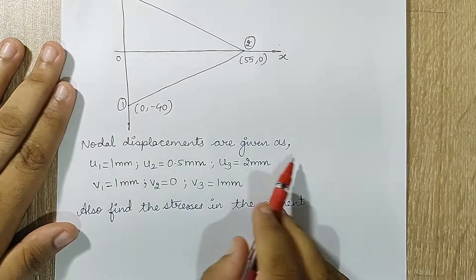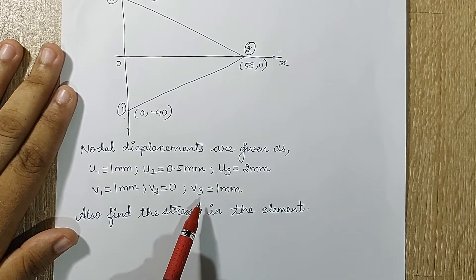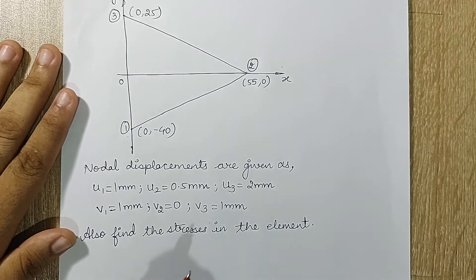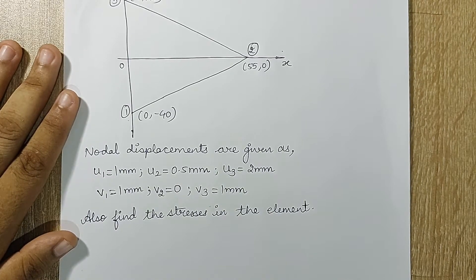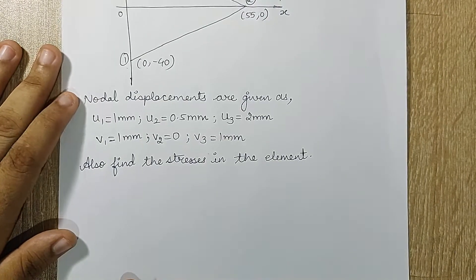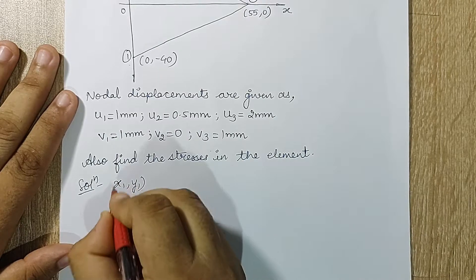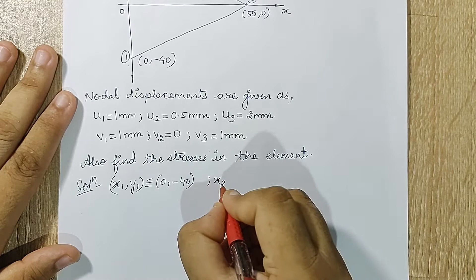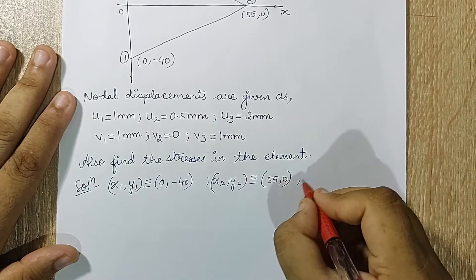Nodal displacements for these nodes are also given: u1, u2, u3, v1, v2, v3. So this is a 2D element analysis in x and y direction. I have to calculate the forces acting on the body — reaction forces — and also calculate the stresses in the element. The first thing I'll do is write down the coordinates: x1, y1 as 0, −40; x2, y2 as 55, 0; and x3, y3 as 0, 25.